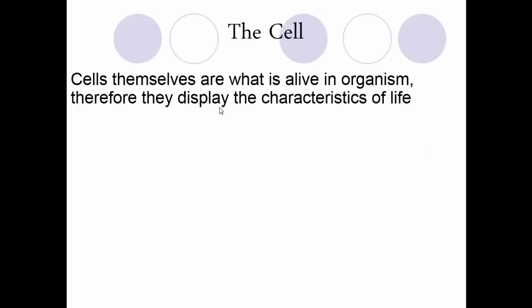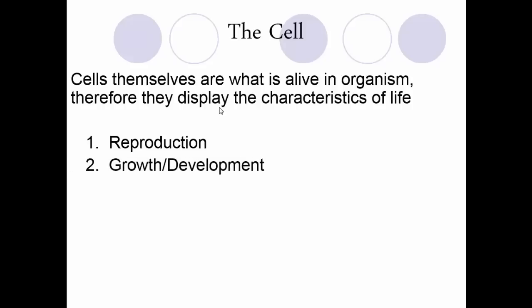When we talk about living organisms, the cell itself is what is alive, and the cell can display the characteristics of life. Some characteristics of life include the ability to reproduce — individual cells can reproduce through the process of mitosis. Growth and development: all cells can grow, develop, and eventually die. Respiration: cells need to breathe, and we perform cellular respiration in every single one of our cells.